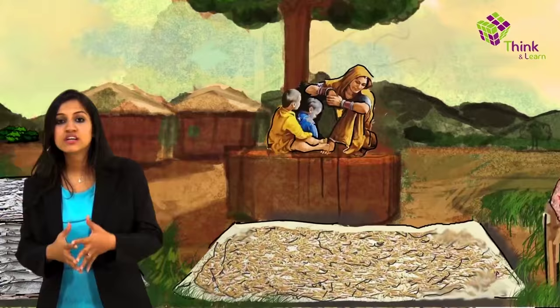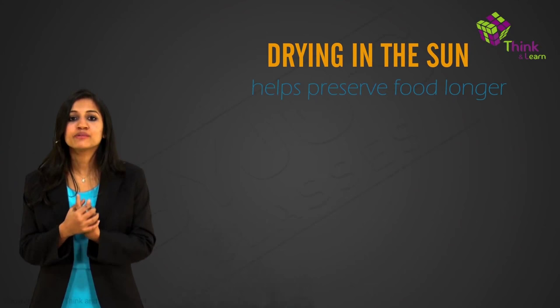You pass by some ladies drying chilies, rice husk, dry fish in the sun. This helps preserve them longer. Fish pickle can actually be made this way with dry fish. And this process of preservation of drying is called dehydrating.